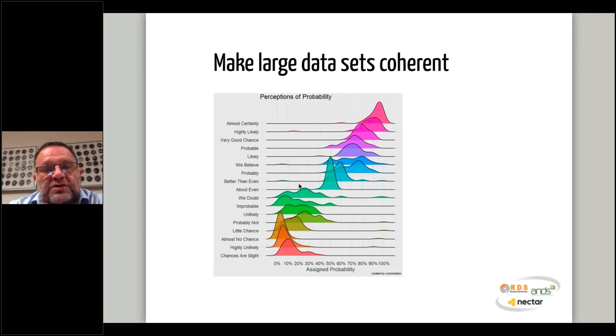The next one was around making large data sets coherent. This is something that at the Bureau we're very interested in: how do you communicate things like probability? When people hear almost certainly, do they think that an event is more probable or less probable than if they hear highly likely or very good chance? What they've done here is taken all these terms and presented them using a technique known as KDE on one graph. We can very easily compare that, for example, if somebody says chances are slight, people think that there's actually slightly more chance of an event happening than if we say it's highly unlikely or if we say there's almost no chance.